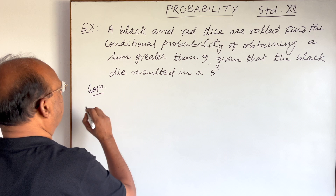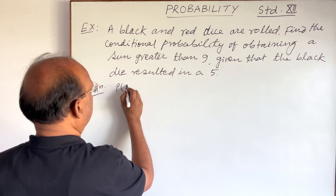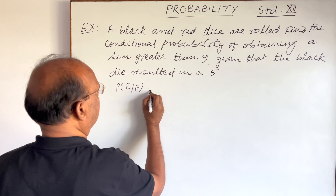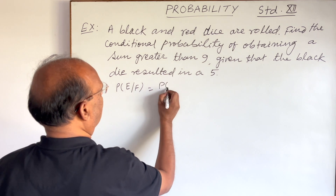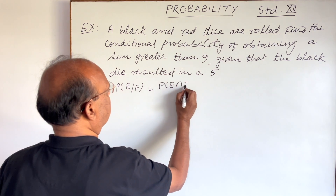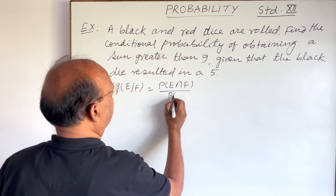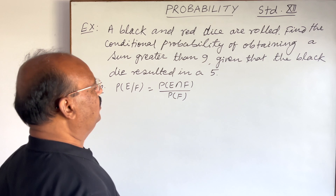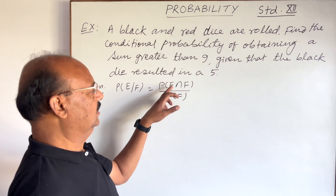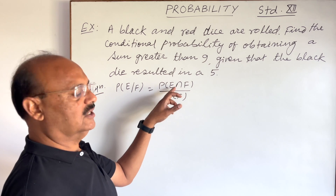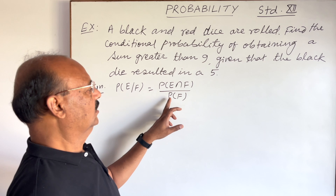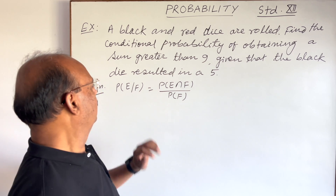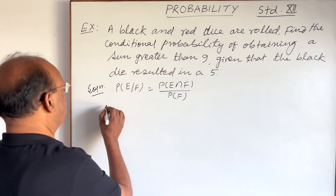As we know, we use the formula: probability of event E conditioned on another event F is equal to probability of E intersection F divided by probability of F. So first of all, we need to find out the probability of the intersection of two events and the probability of the second event F.